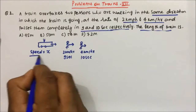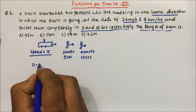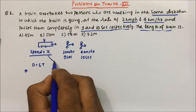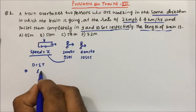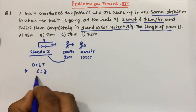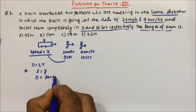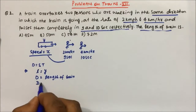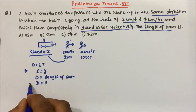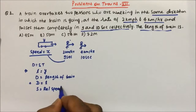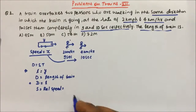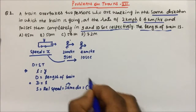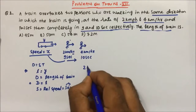We'll use the formula d = st and try to establish a relation between them. In the first case, when the train is crossing the first person, the total distance is only the length of the train — the length of the person is 0 compared to the train. The speed will be the relative speed, because both are moving in the same direction, so we subtract the speeds. The speed of the train is x and the speed of the first man is 2 km/h.